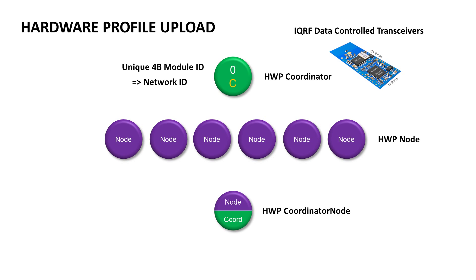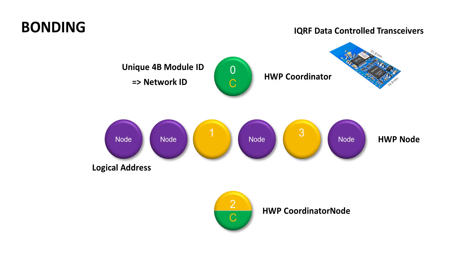If you want to use subnetworks, then you need to upload the coordinator node hardware profile. Now you need to add your nodes to the network of your coordinator and assign them with a logical address. This process is called bonding. The last node should work in a subnetwork, so you need to bond it to the subcoordinator. By the way, you send the bonding command to the subcoordinator from the main coordinator.